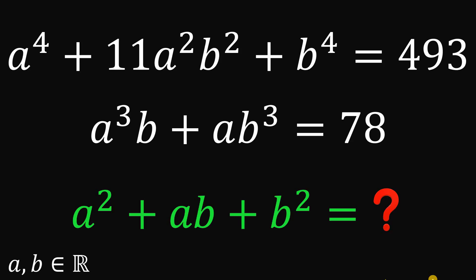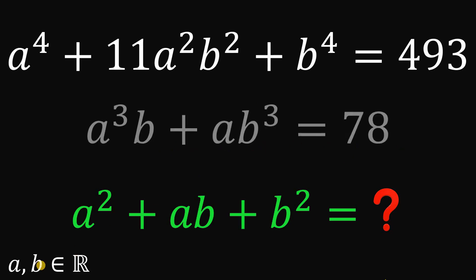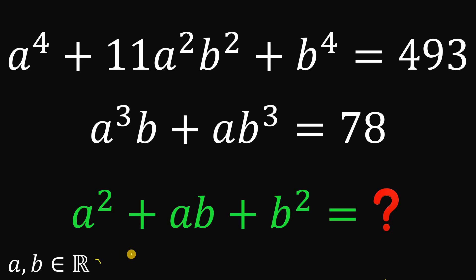For today's video, we will answer a math challenge given by one of our followers. The question goes like this: given these equations, a raised to the fourth power plus 11a²b² plus b raised to the fourth power equals 493, and a³b plus ab³ equals 78, where a and b are both real numbers. Our goal is to find the numerical value or values of a² + ab + b². You can pause the video if you want to give this problem a try.